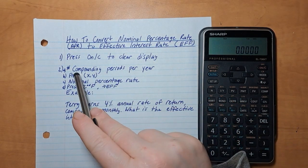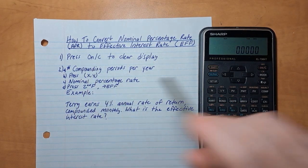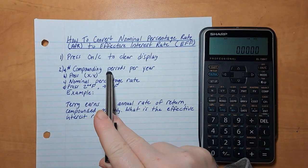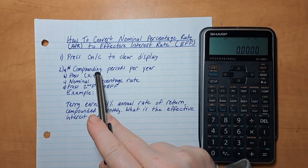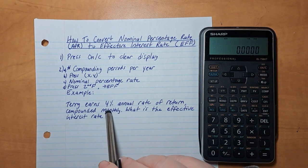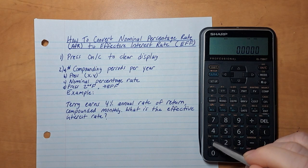Press on and C to clear your display, so you're at zero. Number of compounding, so step A is type in the number of compounding periods for a year. And this is compounded monthly, so that's 12 periods per year, so 12.